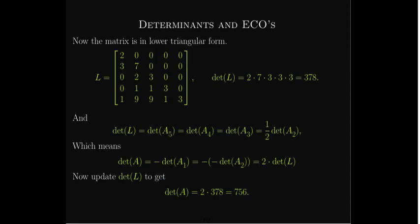The matrix is now in lower triangular form. Its determinant is 2 × 7 × 3 × 3 × 3 = 378. Now we update based on our transformations: the type 3 operations had no impact; the two row swaps changed the sign twice, so they cancel out; only the scaling of column 5 by one-half affects the result. Since det(A₂) = (1/2)·det(L), but det(A₂) = det(A), we have det(A) = 2 × 378 = 756.